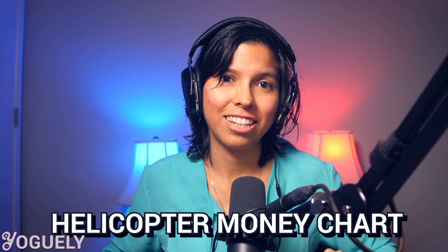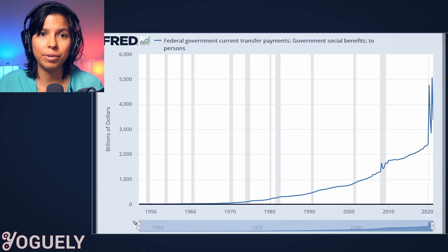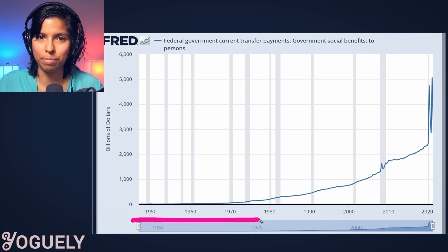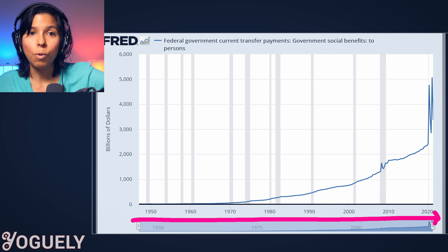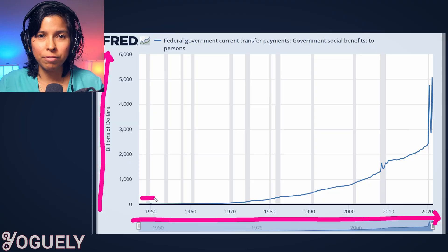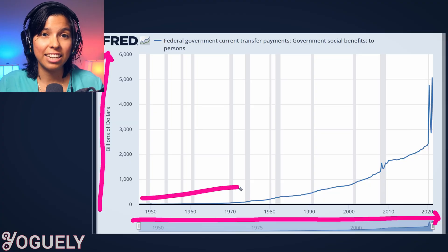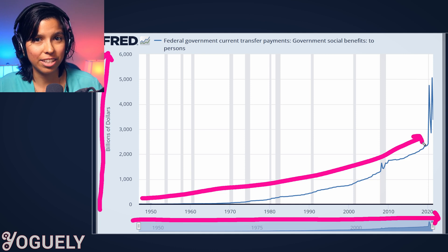Helicopter money is distributed short-term. You can see the history of helicopter money distributed to people in this chart of federal government current transfer payments to people. The x-axis has the timeline from the 1950s to now, and the y-axis shows the amount of cash in billions of dollars. The first thing to note is that the amount of cash has been steadily increasing every quarter over the past 70 years.